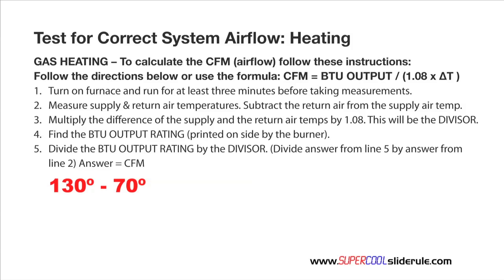We subtract the return from the supply, which will give us 60 degrees. We then multiply this by 1.08, which gives us 64.8. Now, this is our divisor. We will use this number later.